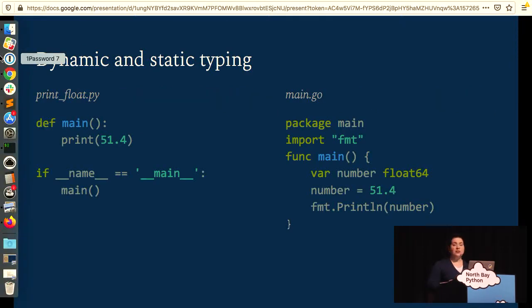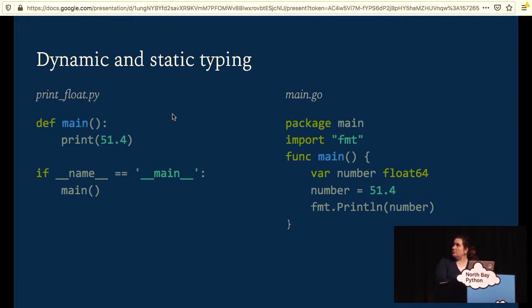It's also important to consider dynamic and static typing. So I have here an example in Python and an example in Go. And Go is a statically typed language. And in Python, print doesn't care what I pass to it. I can pass it an integer. I can pass it a string. I can pass it anything with the dunder repr method. And it'll print it for me. In Go, I have to specifically say that this number that I want to print is a type of the float64 type. And that's because Go is a statically typed language. You can in Go, you don't necessarily have to do this, but I'm just doing this to be explicit.